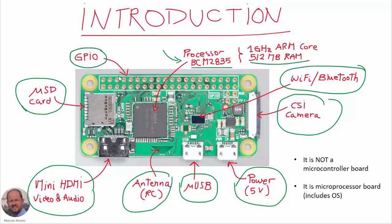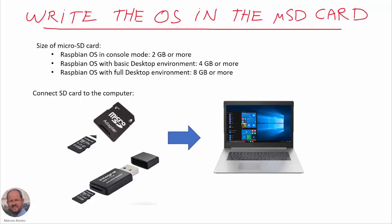In this area here we have the general purpose input output header, in which we can connect our different input and output signals. Finally, we need to know that this is not a microcontroller board - this is a microprocessor board. The difference is that a microprocessor board includes an operating system. This is much more powerful than a microcontroller board. Usually in a microcontroller board we only have one program to run, but here we are running operating systems in which we can have many processes and many programs running together, and usually the operating system in this kind of device is based on Linux.